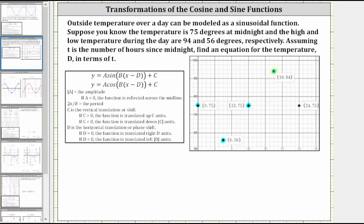After reaching the high temperature, the temperature begins to drop. Six hours later, the temperature reaches 75 degrees again, which gives us the ordered pair 24 comma 75. Let's go ahead and sketch the graph over this interval.